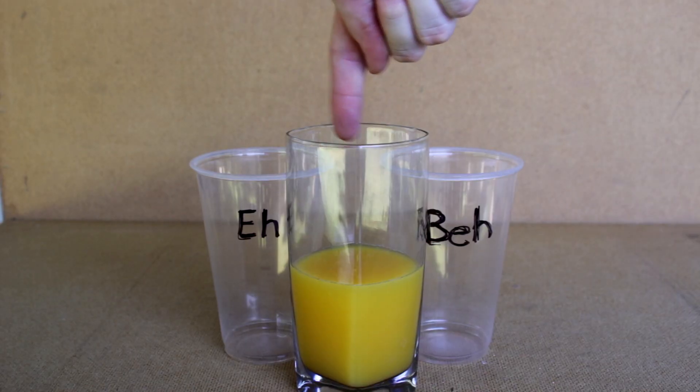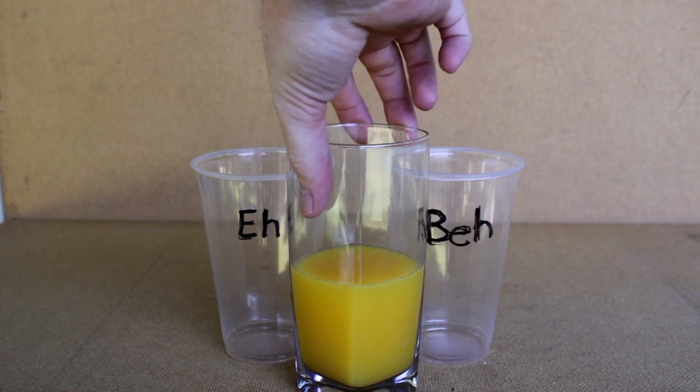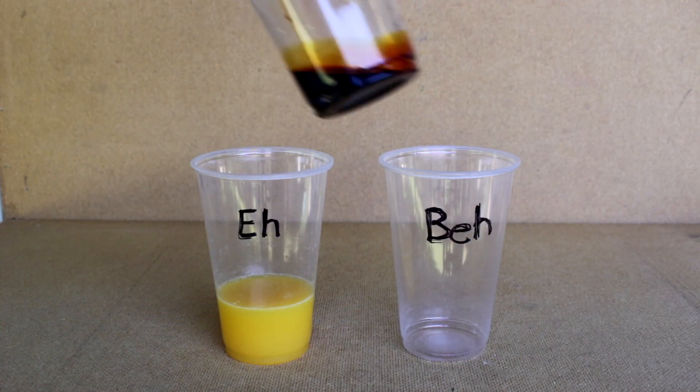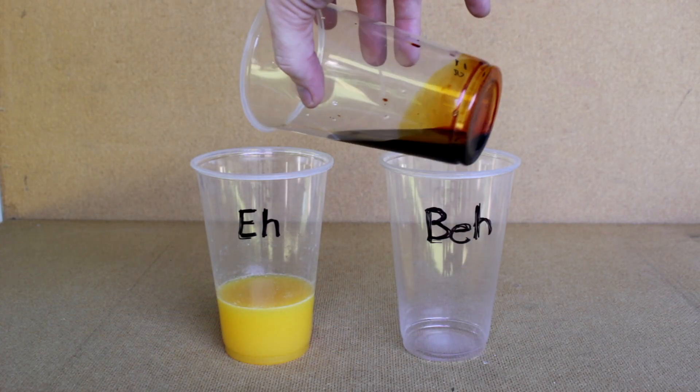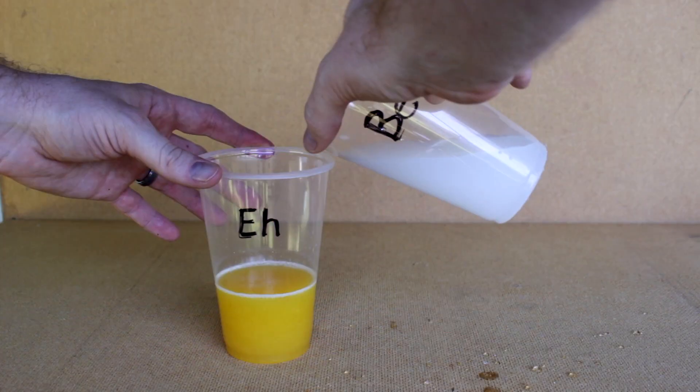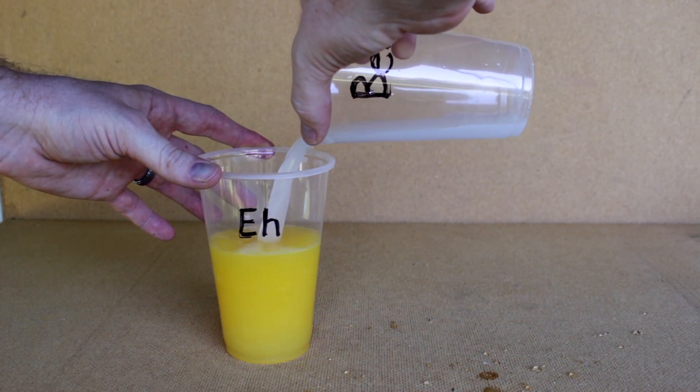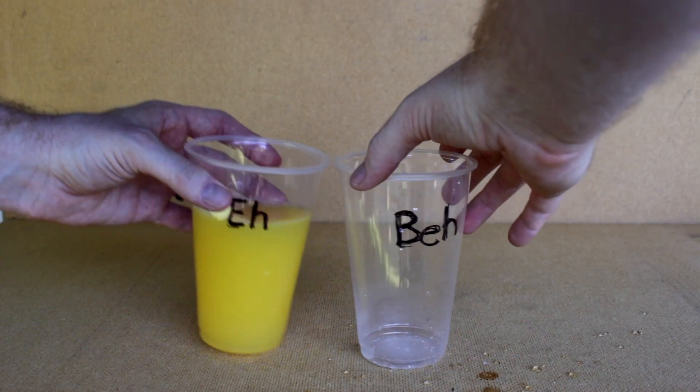You can also do this with orange juice, because orange juice has vitamin C. Follow the same steps, except instead of dissolving the vitamin C tablet in half a cup of water, just use half a cup of OJ. Make solutions A and B together, and you get your clock reaction.